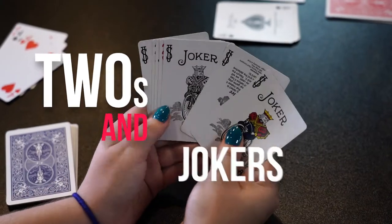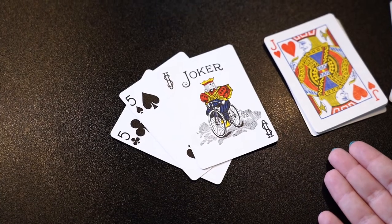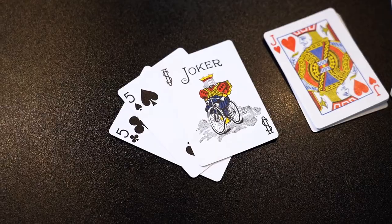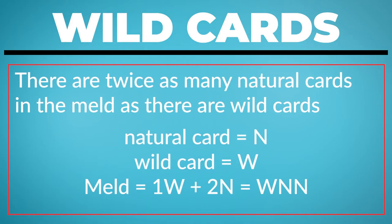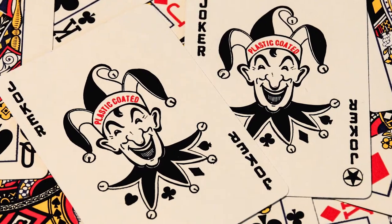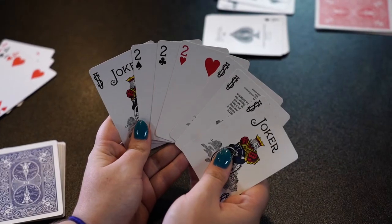Let's talk about twos and jokers. Twos and jokers are wild cards. Wild cards may be used to substitute any card in a meld. Granted, there are twice as many natural cards in the meld as there are wild cards. A meld may be made entirely of wild cards, though.